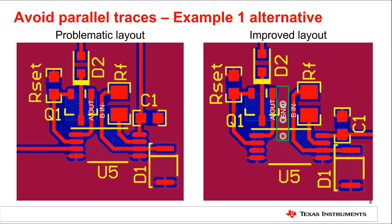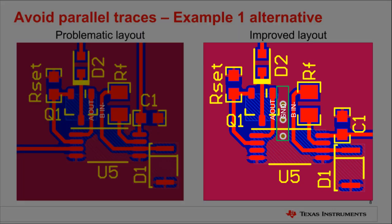Just as the issue of the long in minus trace was solved by moving the RF component, so too can it solve the problem of the a out and b in minus traces running in parallel. Unfortunately, it may not always be possible or practical to rearrange components in such a manner. Sometimes space constraints make such layout strategies difficult to implement. In cases where parallel traces are somewhat unavoidable, a different approach can be used. Here is an example of an alternative solution.